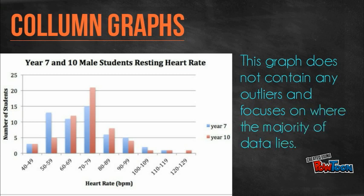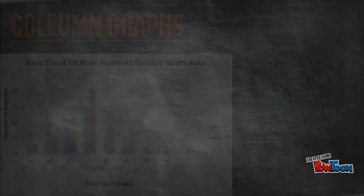The X axis represents resting heart rate and the Y axis represents the number of students. It shows that a higher number of Year 7s fall between 50 to 80 beats per minute, while Year 10s fall mostly between 60 to 90 beats per minute.